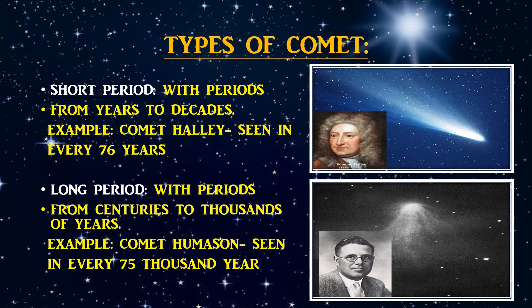There are two types of a comet. The short-period comet, with periods from years to decades — an example is Comet Halley, which is seen every 76 years. The second type is the long-period comet, with periods from centuries to thousands of years — an example is Comet Oumuamua, seen every 75,000 years.